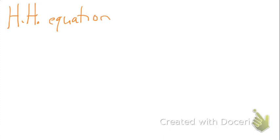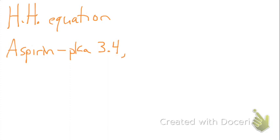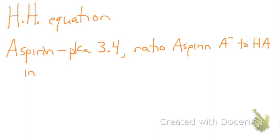In this video, we are going to be covering the Henderson-Hasselbalch equation and how we can use it to solve a variety of different problems. The first problem deals with ratios. Aspirin is a weak acid with a pKa of 3.4, and we want to know the ratio of A⁻ to HA in the blood, which has a pH of 7.4.